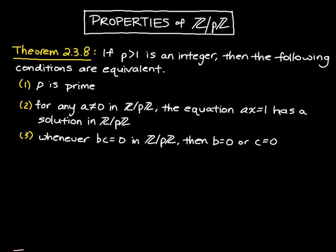The following theorem characterizes equivalent statements to p being a prime number. We have that p is prime. This is equivalent to saying that the equation ax equals 1 has a solution in Z mod pZ.